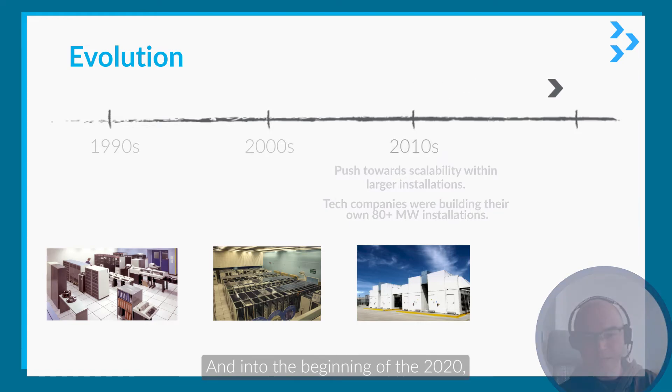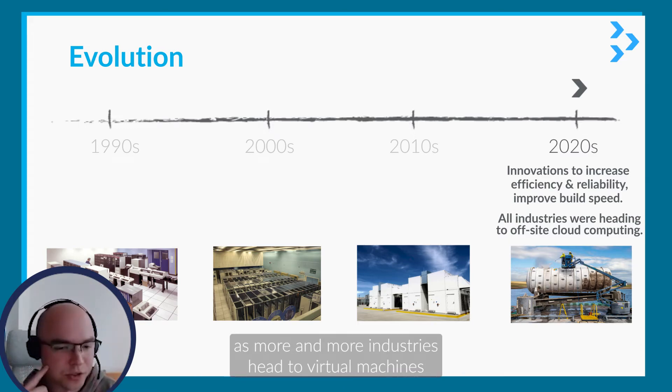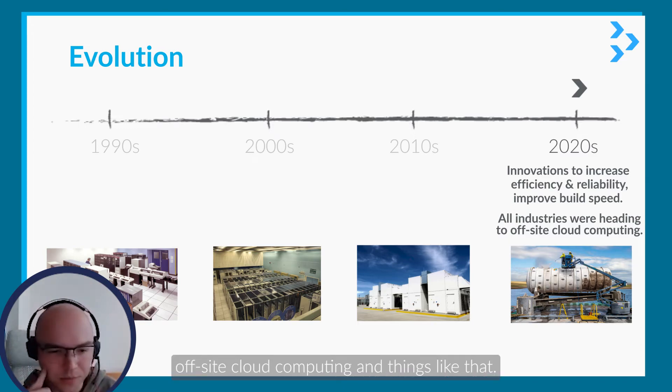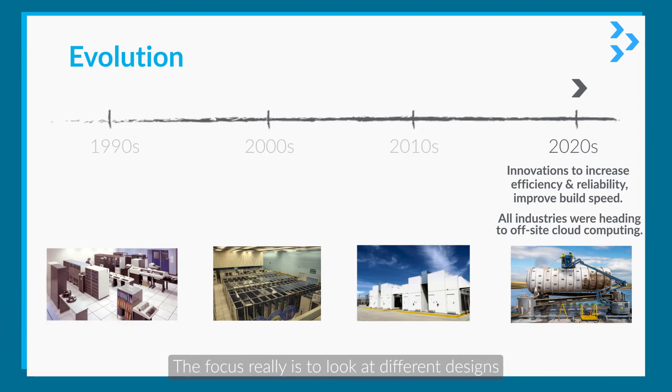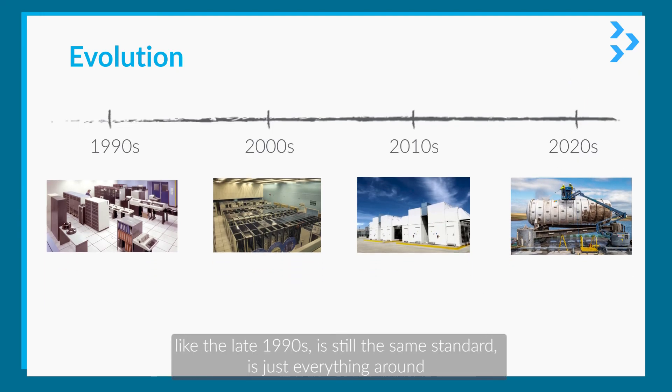Into the beginning of the 2020s, the focus has really been efficiency, reliability, and build speed as more and more industries head to virtual machines, off-site cloud computing, and things like that. The focus really is to look at different designs that can bring the data closer to the users in more efficient areas. Interesting to note, the traditional server rack as seen in the late 1990s is still the same standard; it's just everything around it is being innovated.